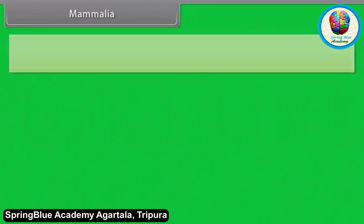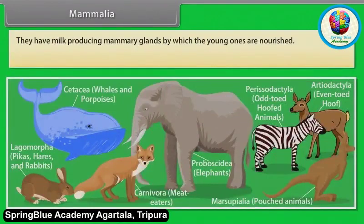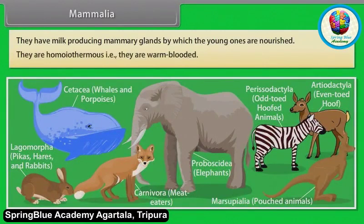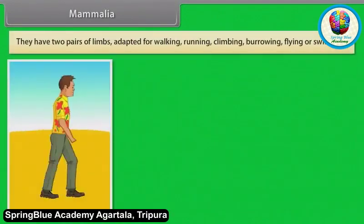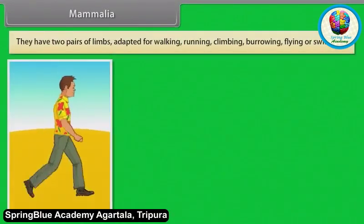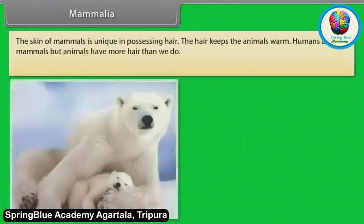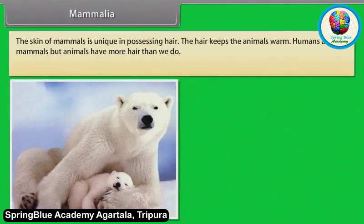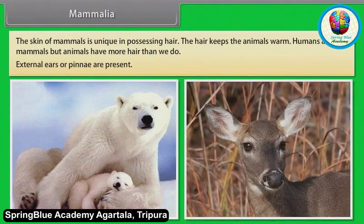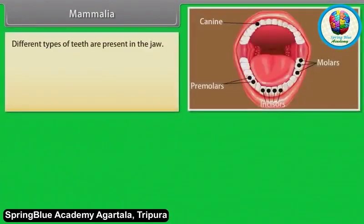Mammalia — They have milk-producing mammary glands by which the young ones are nourished. They are homeothermous — that is, warm-blooded. They have two pairs of limbs adapted for walking, running, climbing, burrowing, flying or swimming. The skin of mammals is unique in possessing hair, which keeps the animals warm. Humans are mammals but animals have more hair than we do. External ears or pinnae are present. Different types of teeth are present in the jaw.